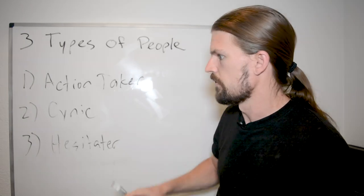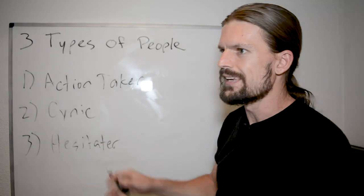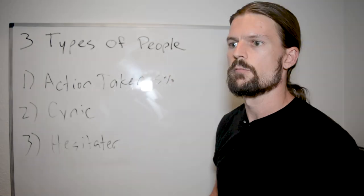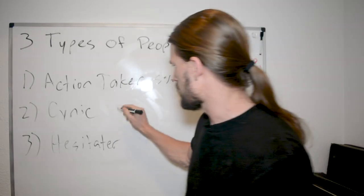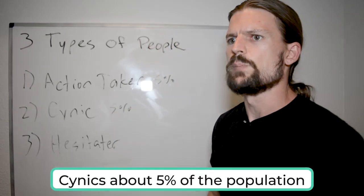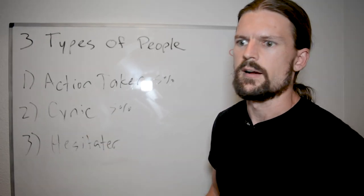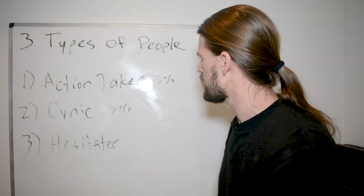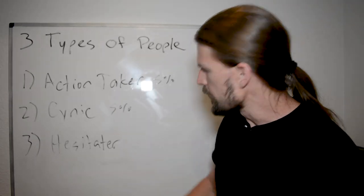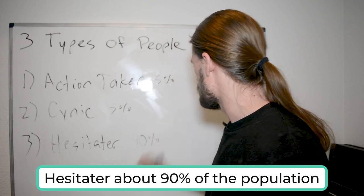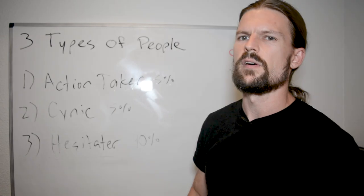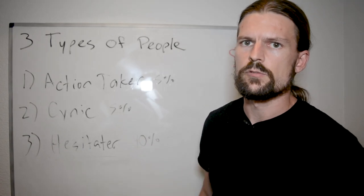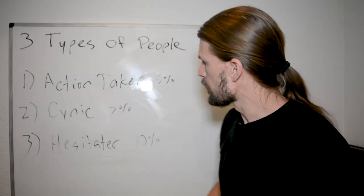Now, from what I can tell, and this is my unscientific analysis just based on what I've seen in the world, is that action takers are about five percent of the population. Only about five percent of the population are action takers. Cynics are another about five percent of the population. Most people aren't that pessimistic. There's a few, and they're very loud, and you hear of them a lot because of how whiny they are, but I don't think they make up more than five percent of the population, which leaves hesitator at 90 percent of the population. This is the vast majority of people fall into this hesitator category, and this is why the vast majority of people never make their dreams come true. They never get what they really want out of life.